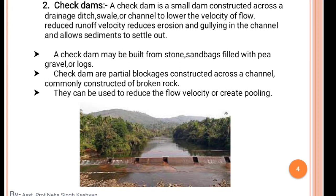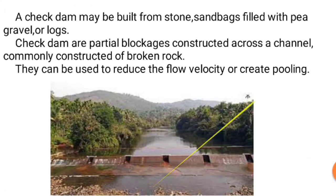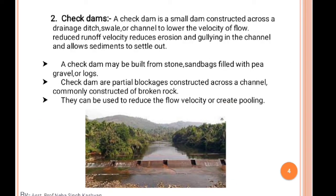Check dams may be built from stone, sandbags filled with big gravel, and rocks. In a village, when crossing water, sandbags placed within plastic bags can build a bridge-like structure. This could be a temporary check dam system. Check dams can be either permanent or temporary, and are partially blockage structures constructed across a channel, commonly from broken rocks, to reduce flow velocity or create pooling.